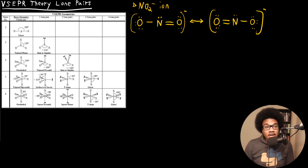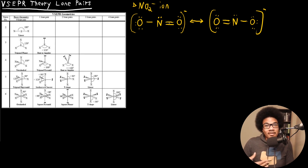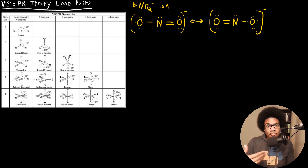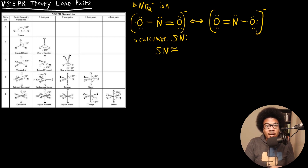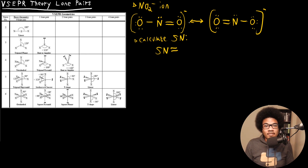Remember, in a steric number calculation we're looking at bonded atoms, not at whether it's a single, double, or triple bond — one bonded atom is just one bonded atom. So let's calculate the steric number (SN), which is the sum of the number of bonded atoms and the number of lone pairs around the central atom. First we identify the central atom — in this case it's clearly the central nitrogen.